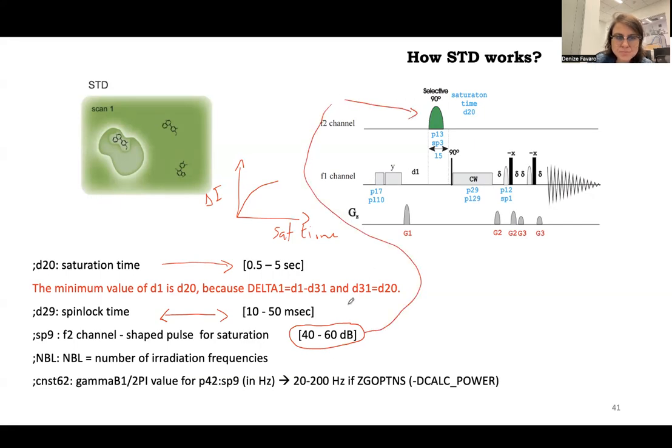But you set the power. You can either choose the power, for example, between 40 and 60. So 60, you have really weak saturation and 40 is strong saturation. You want to be selective. You want to just selectively excite the protein peak. You can also, there is on this pulse sequence, you can do minus calc power. So then instead of choosing the power, you can choose. I want to excite 20 Hertz, 100 Hertz, 200 Hertz. Again, you want to be selective. So you won't go beyond 200 Hertz, but you want to also excite a reasonable region of your protein.